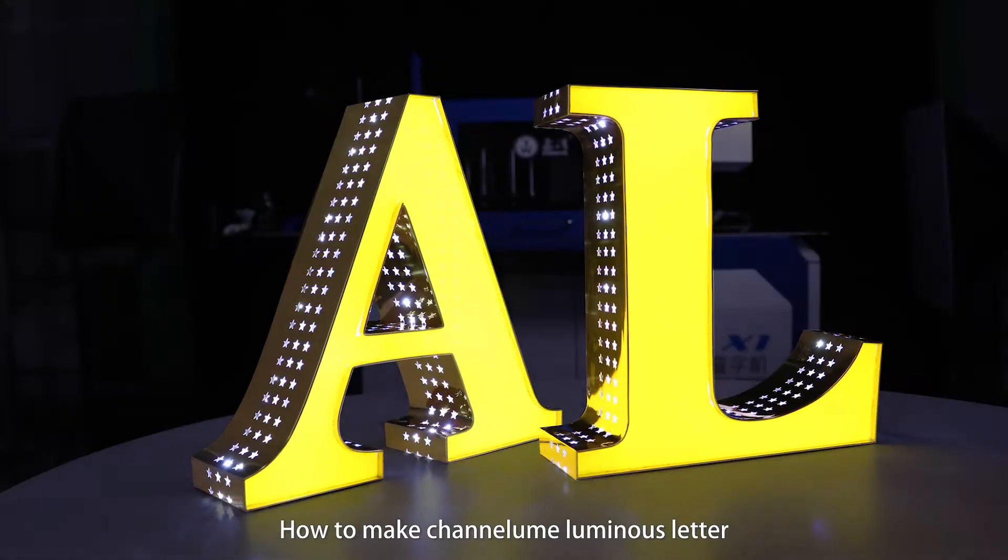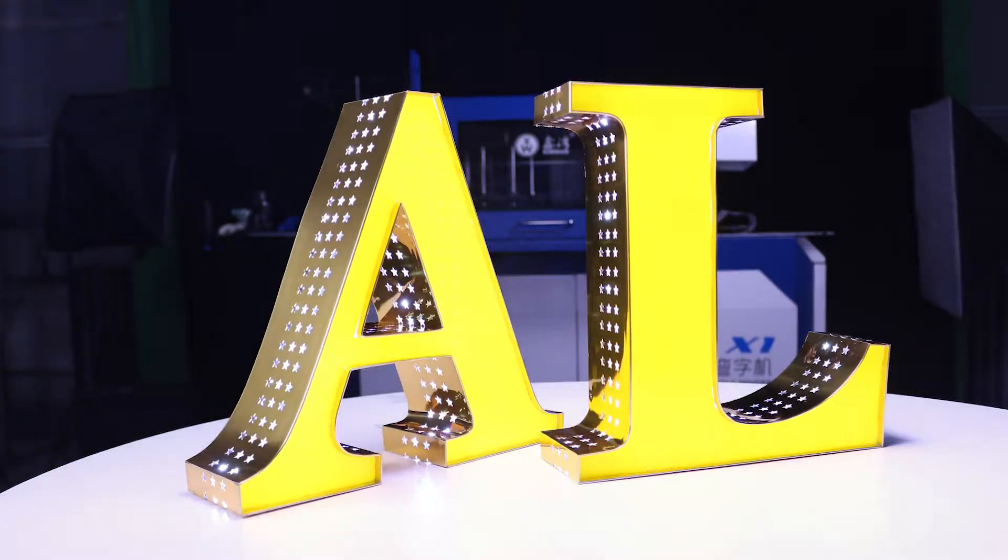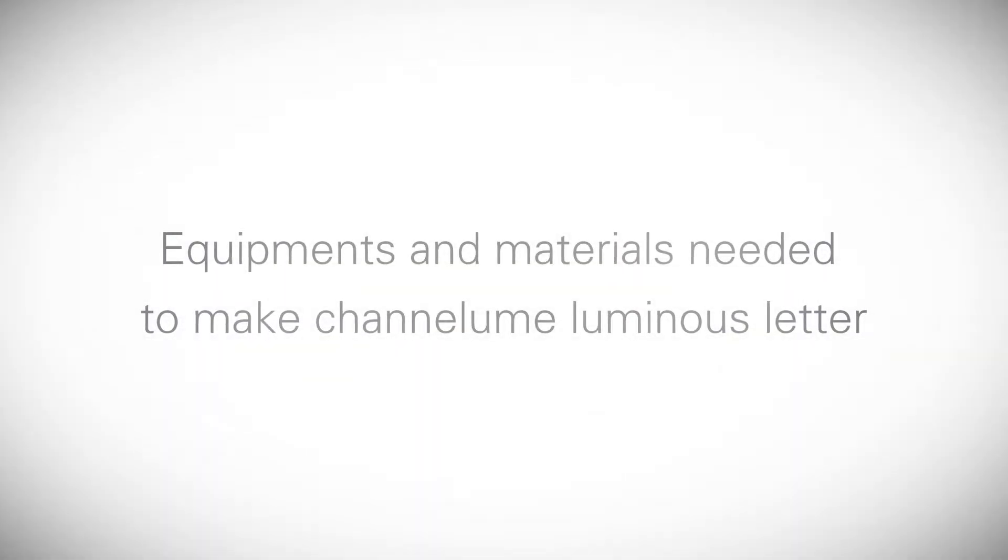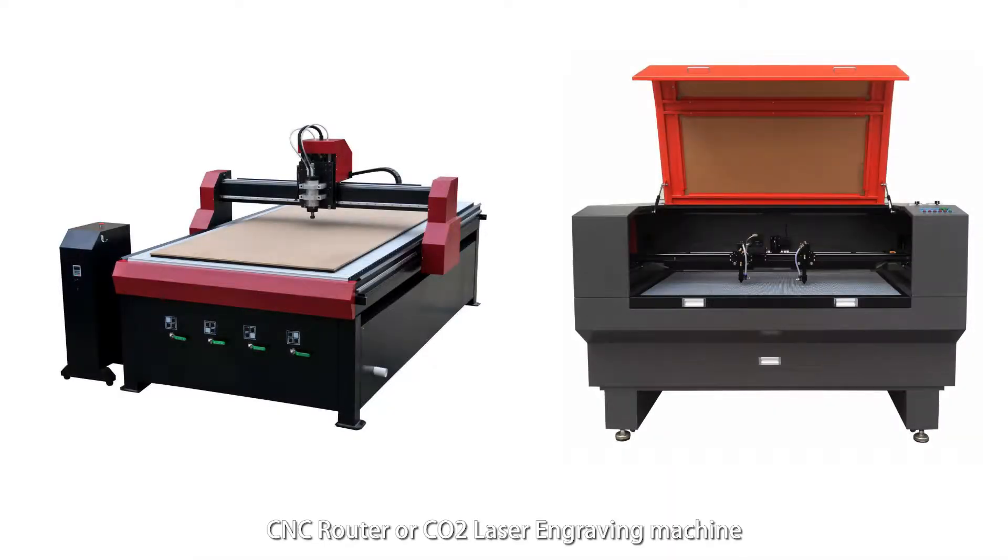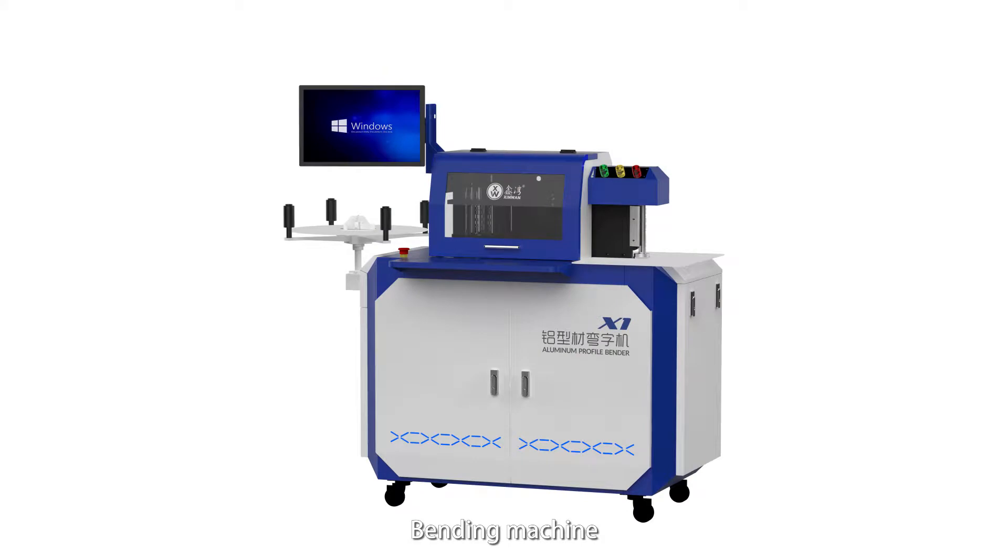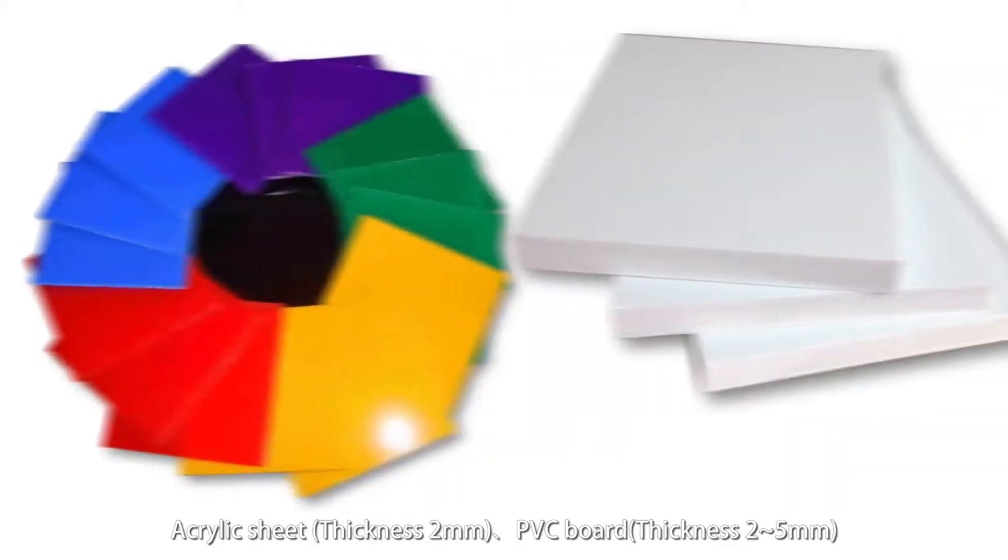How to make Channelume Luminous Letter? Equipment and materials needed to make Channelume Luminous Letter: CNC router or CO2 laser engraving machine, banding machine, acrylic sheet.